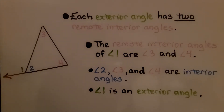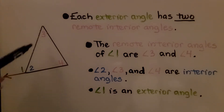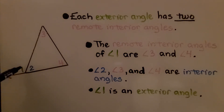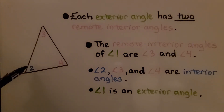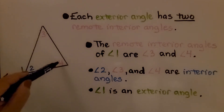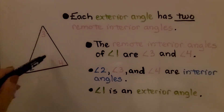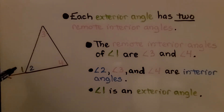Each exterior angle has two remote interior angles. The remote interior angles of angle one are angle three and angle four — they are the angles that are not next to this exterior angle. Angle two, angle three, and angle four are interior angles. Angle one is an exterior angle, but three and four are the remote interior angles.